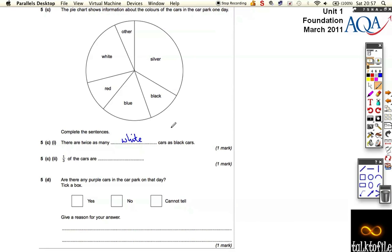It's got to be double size of black in this pie chart. And one-third of the cars... Well, sometimes you have to turn your paper or turn your head so you can see this. This is the one that's the third. Three of these, roughly three of these would fit in. So one-third of the cars are silver.